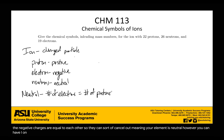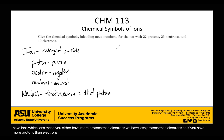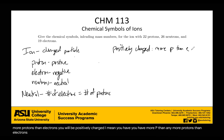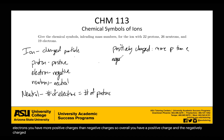You can have ions, which means you either have more protons than electrons, or you have less protons than electrons. If you have more protons than electrons, you will be positively charged — you have more positive charges than negative charges, so overall you have a positive charge. A negative charge is just the other way around: you have more electrons than protons.